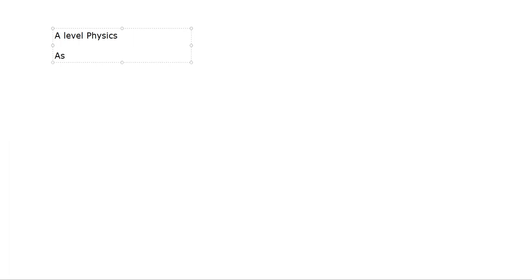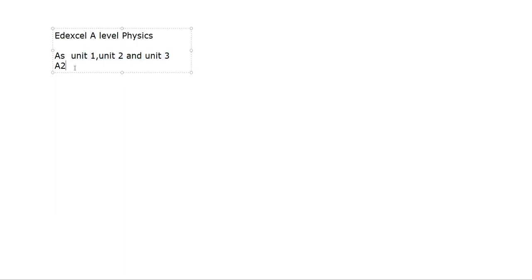AS Physics, A Levels Physics. It is divided into two parts: one is AS and the other one is A2. AS has three units: Unit 1, Unit 2, and Unit 3. For A2, you have Unit 4, Unit 5, and Unit 6.